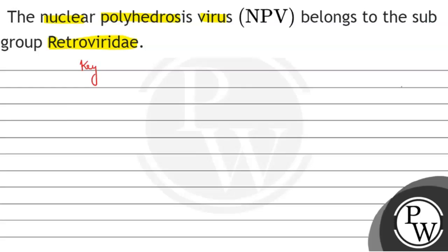The key concept here in this question is nuclear polyhedrosis virus, in short NPV. This is the name of the nuclear polyhedrosis virus.